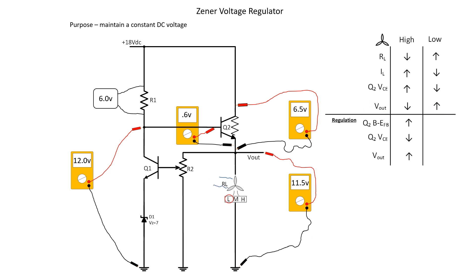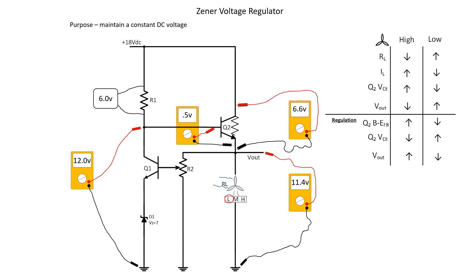Look what happens to that voltage drop across the base-emitter junction — it decreased, which decreases forward bias of our transistor. When that happens, current flow is going to decrease, or it's going to resist current flow more, and cause its voltage drop to go back up. When this happens, it brings Vout back down to where we're supposed to be. This circuit basically just works in action and reaction. We have a change in current, and our transistor is going to react to bring it back to our constant DC output voltage.